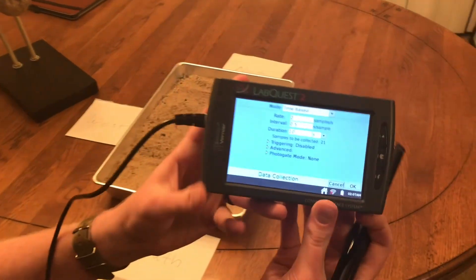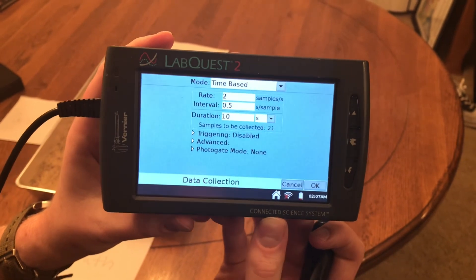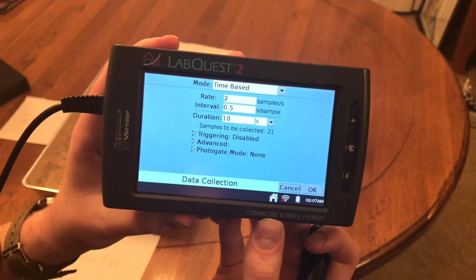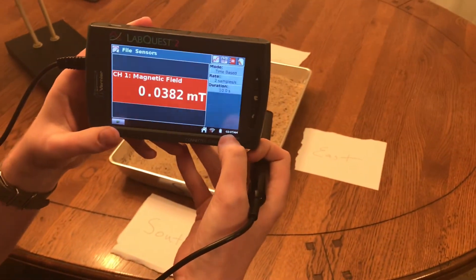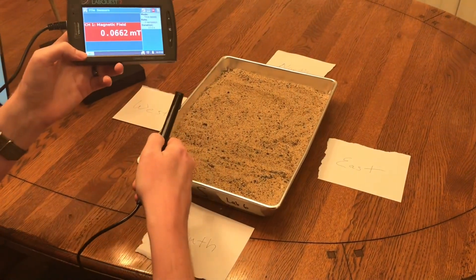And so then what I have is I've set the lab quest. What you're going to want to do is you're going to want to do a rate of 2 samples per second, and your duration is going to be 10 seconds. So this part we have to be really careful for, but what we're going to do, so I'll hit OK on that. When you're ready, you're going to hit play on the lab quest,